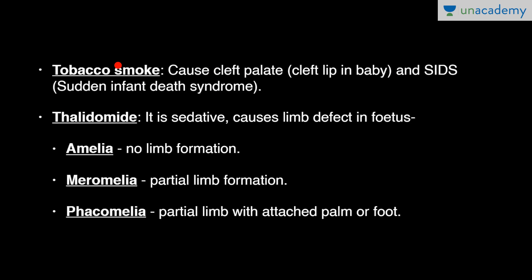If the mother chews tobacco it leads to cleft palate and SIDS. Thalidomide is a sedative drug that causes limb defects in the fetus. Amelia means no limb formation; meromelia means partial limb formation; phocomelia means partial limb with an attached palm or foot — for example, there would be an arm and palm but no forearm. The pregnant mother should not drink alcohol, use tobacco, or take any such drug, as it will be harmful for the fetus.